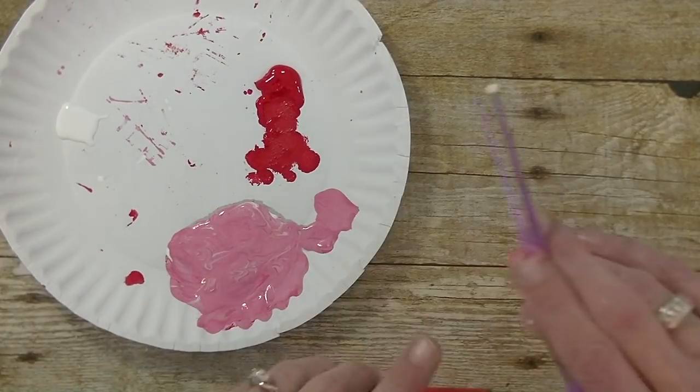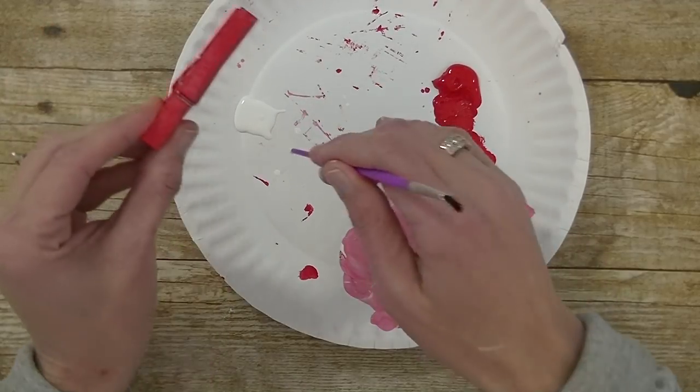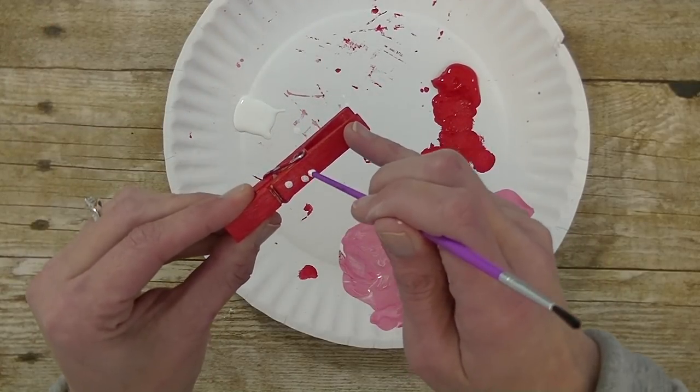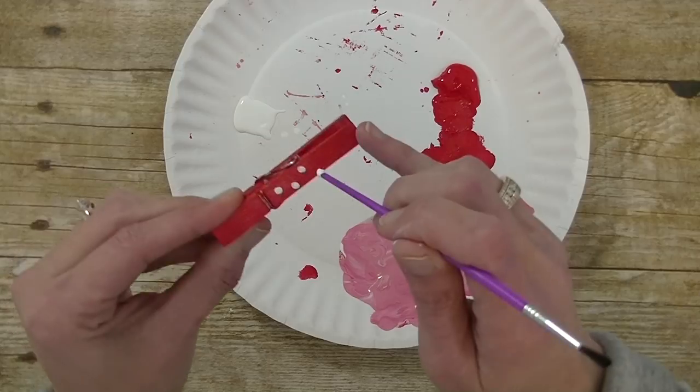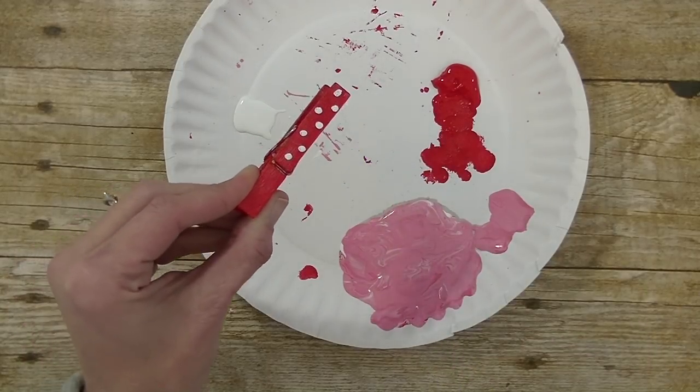I'm going to take some white paint and the end of a paintbrush to create little dots on our critter. Again they can use a marker. Okay so we have that there. We're going to set that aside.